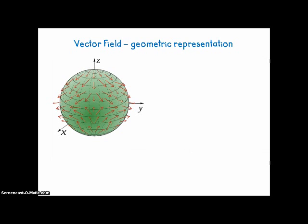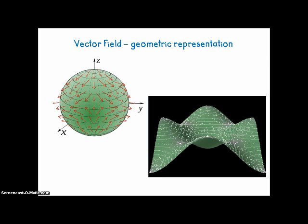Here are some prettier examples of vector fields drawn by artists. Of course, the actual vector field has a vector at every single point in the plane or in three-space. If you drew all of the vectors, it would look like a solid black area, which wouldn't be very helpful. So we just draw a few of them.